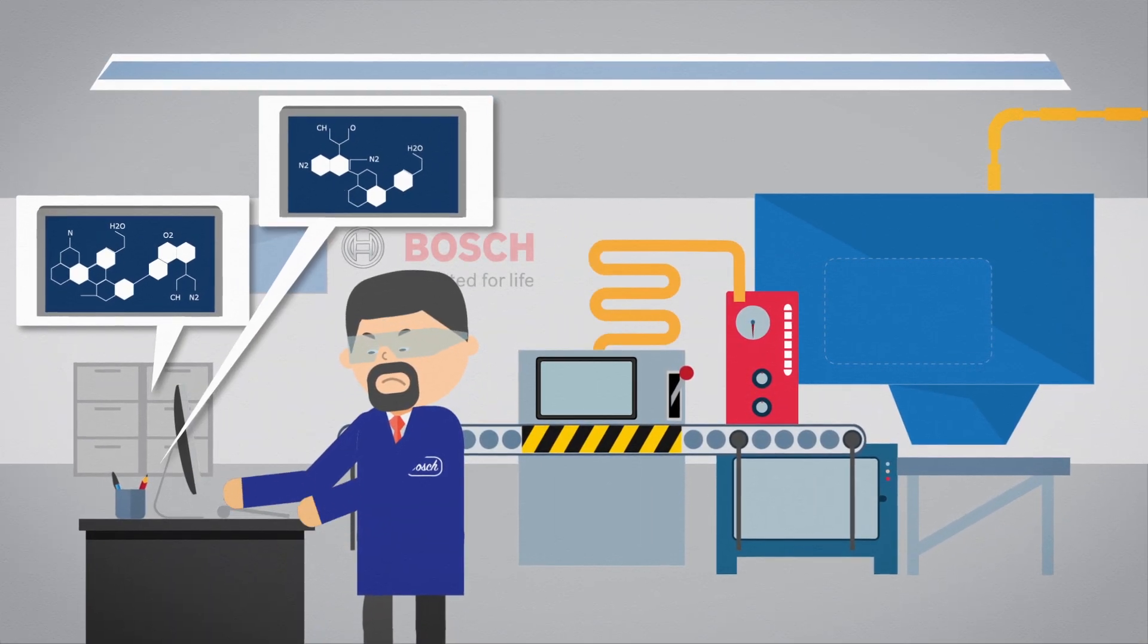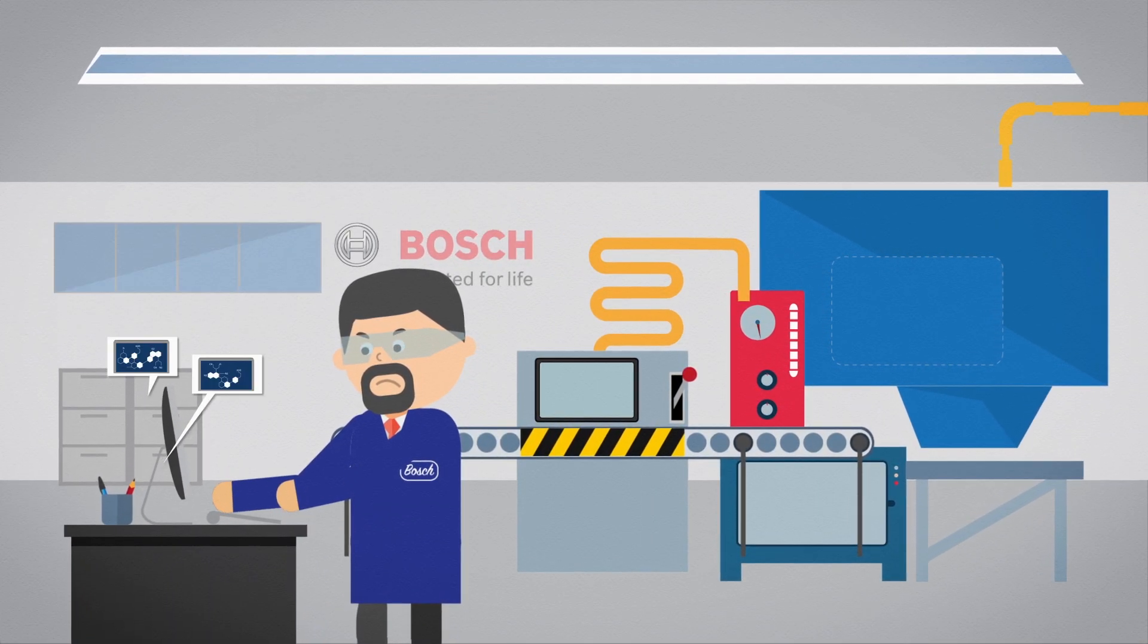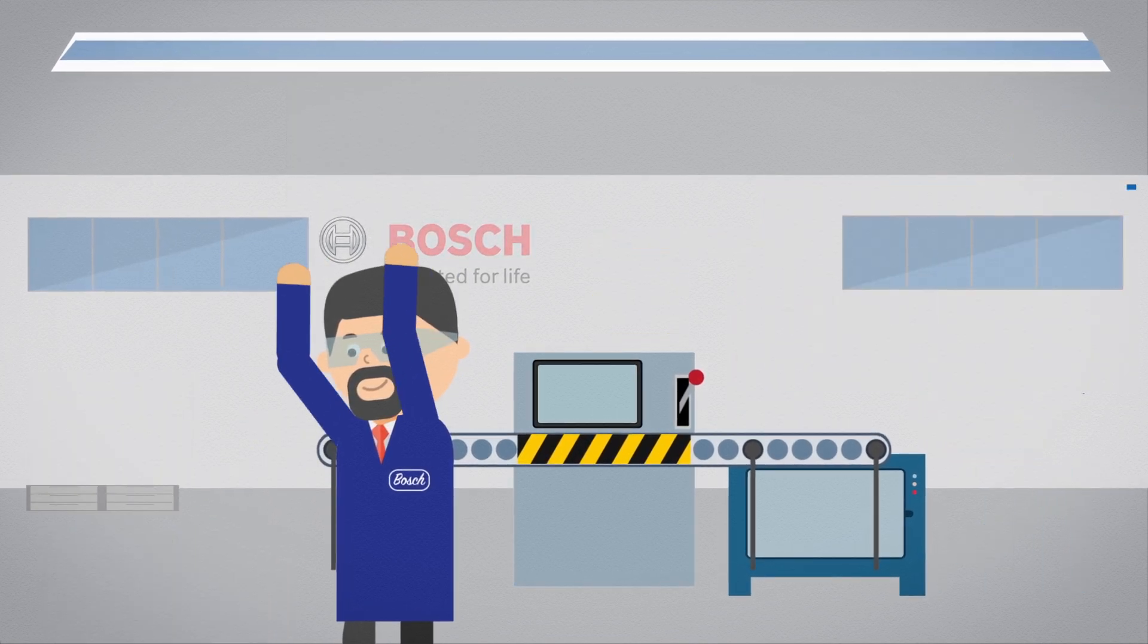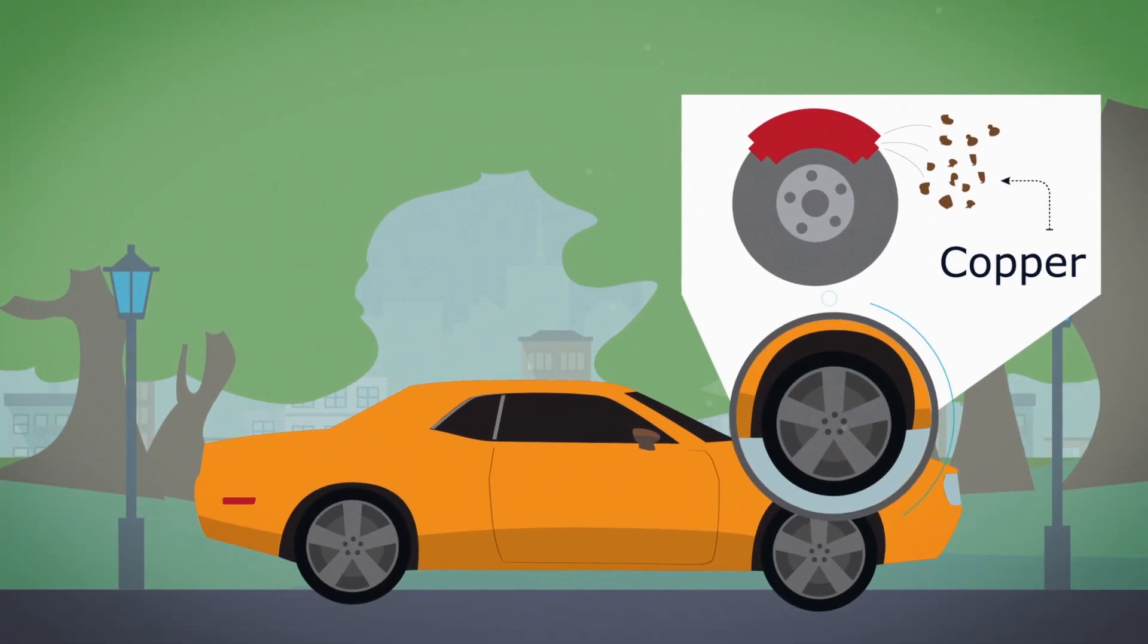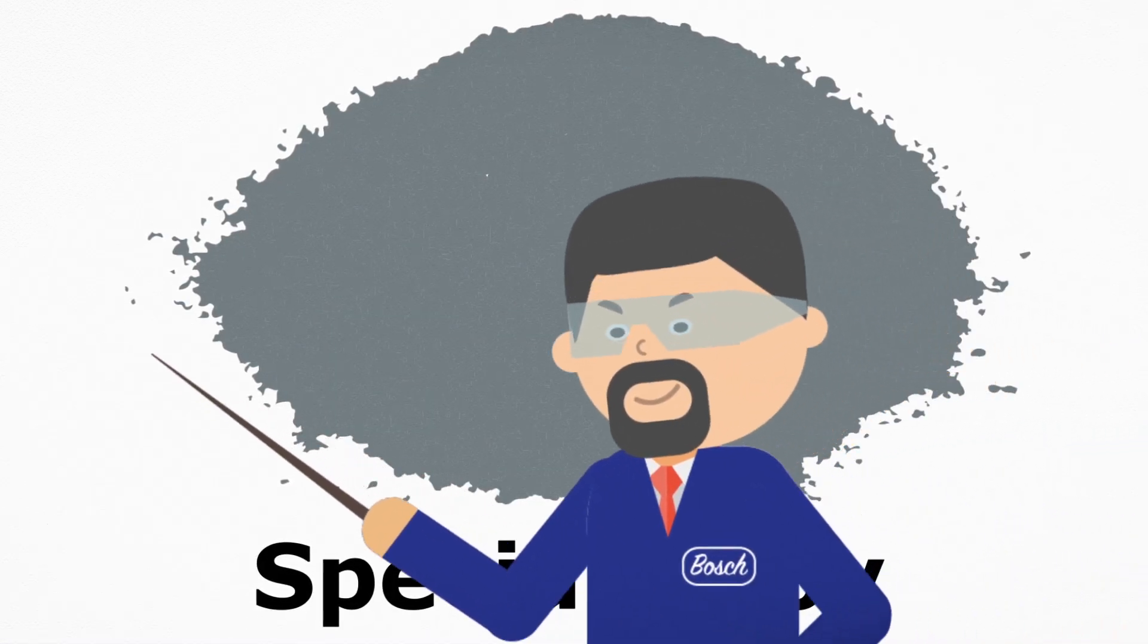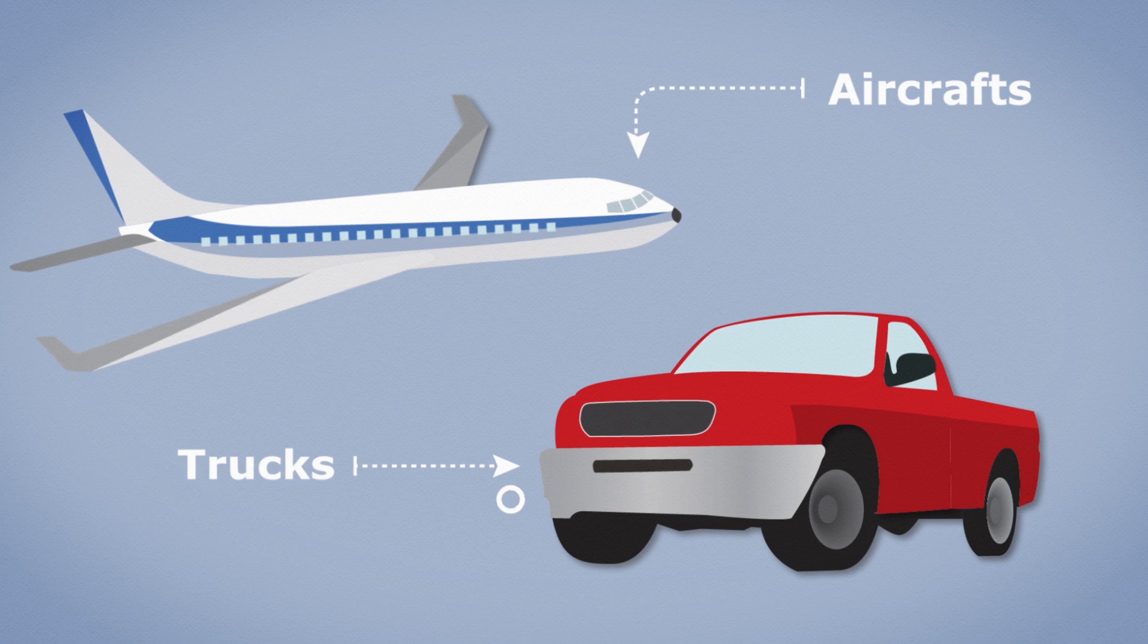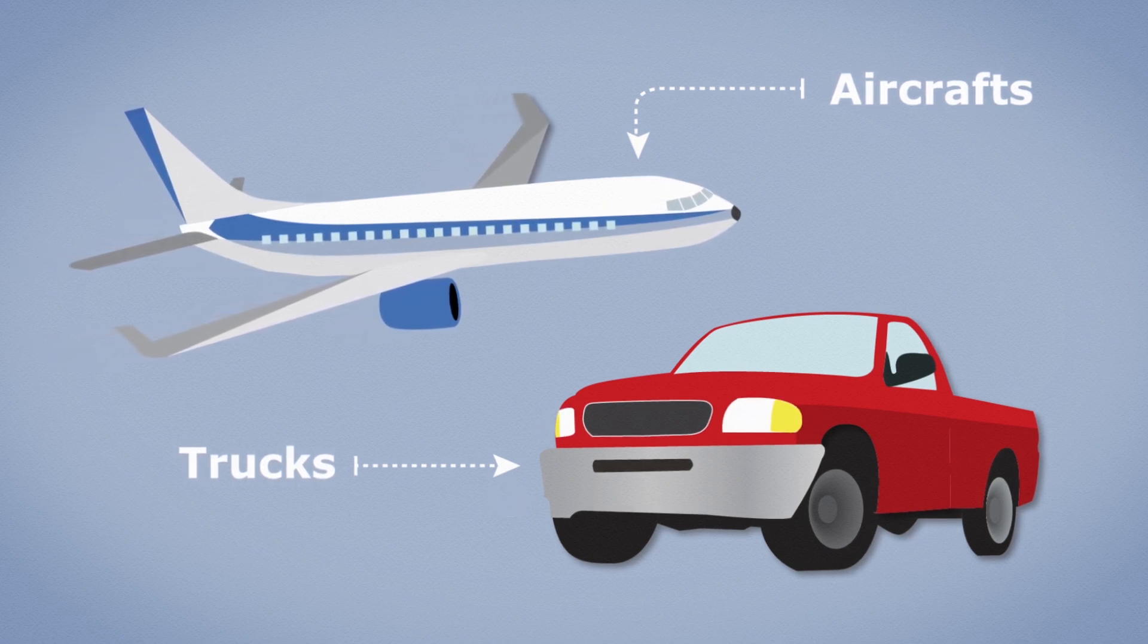It's been a multi-year process to develop the technology to eliminate copper. There's no one particular chemical that is a one-to-one replacement for copper. Bosch replaced copper with a special aerospace alloy in its ceramic brake pad formula. This alloy is used to build aircrafts and trucks, which is why it is extremely robust and lightweight.